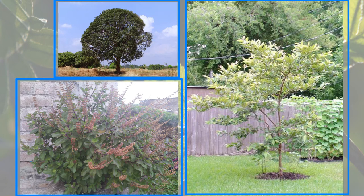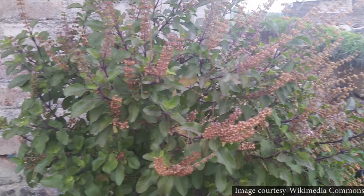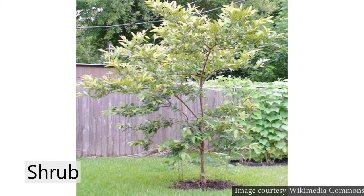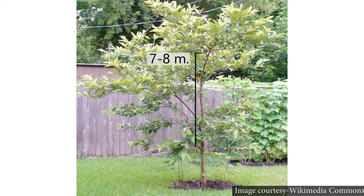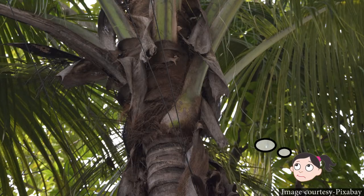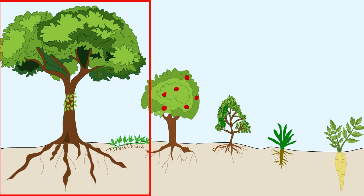According to stem height, we can group plants as herbs, shrubs, or trees. Tulsi is an example of a herb — the plant is short. The stems of hibiscus and guava are brown, hard, and woody; these shrubs grow up to a height of five to seven feet. Mango and coconut have stems that are hard, brown, woody, and very tall — these are trees.